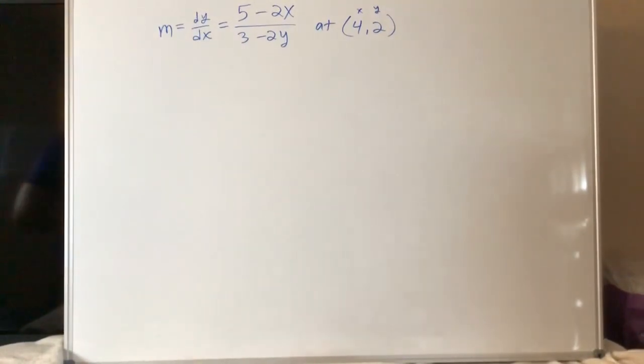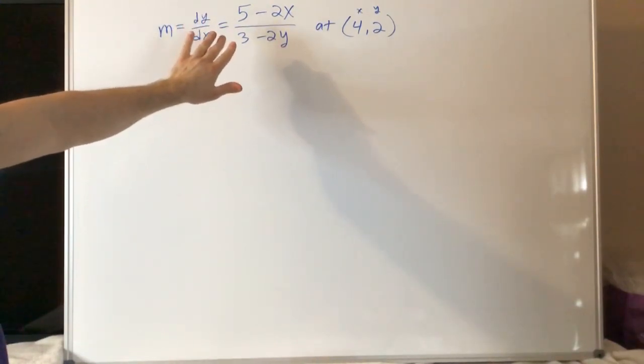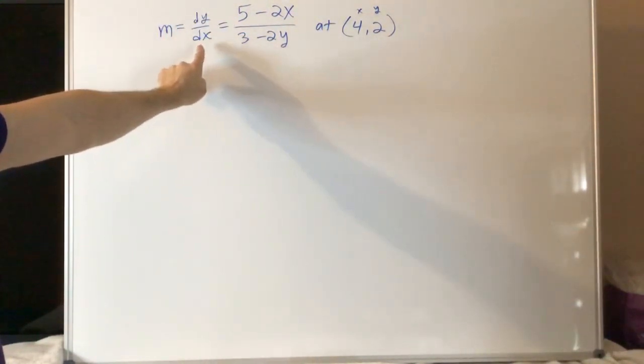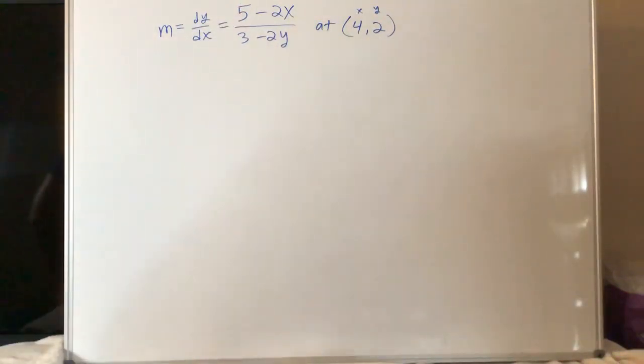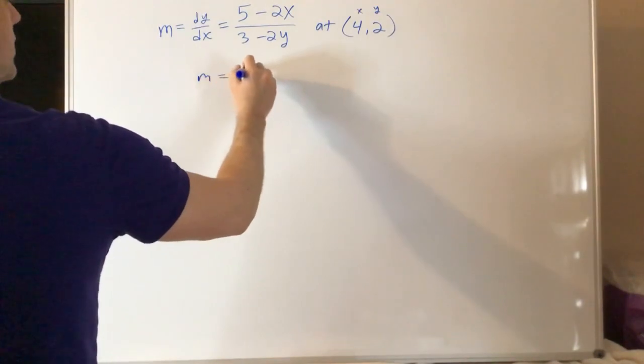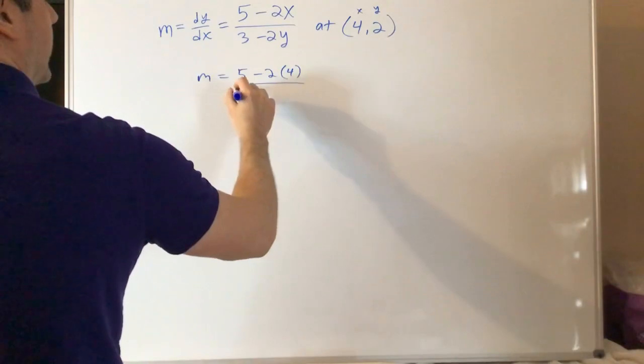Okay, so I'm almost at the end here. I have my formula. I took the derivative of both sides with respect to x. I used implicit differentiation. I made myself an equation. I solved for dy/dx. I got this formula. Now I'm going to plug x and y into this formula, which will tell me what the m is. And I made this one nice.